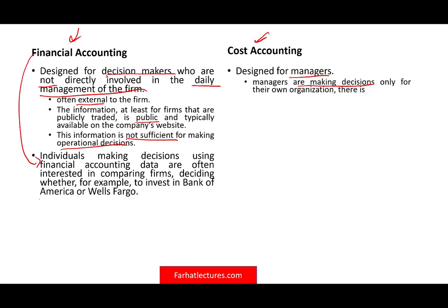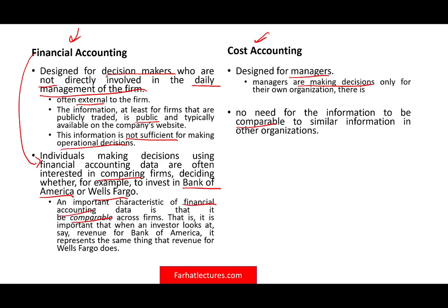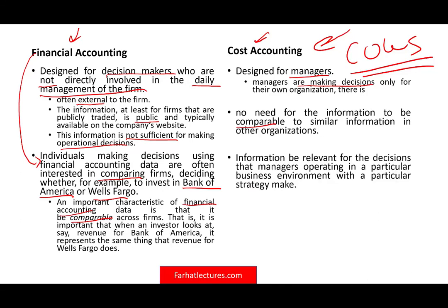A key characteristic of financial information is that it must be comparable — from one company to another. So if Bank of America provides information about revenue, it has to be comparable to someone like Wells Fargo, because you are addressing investors. Cost information, however, does not need to be comparable to other organizations. You don't have to account for your revenue or cost of goods sold the same way another company does internally. The information only needs to be relevant for the decisions that managers operating the business need — external opinion doesn't matter.